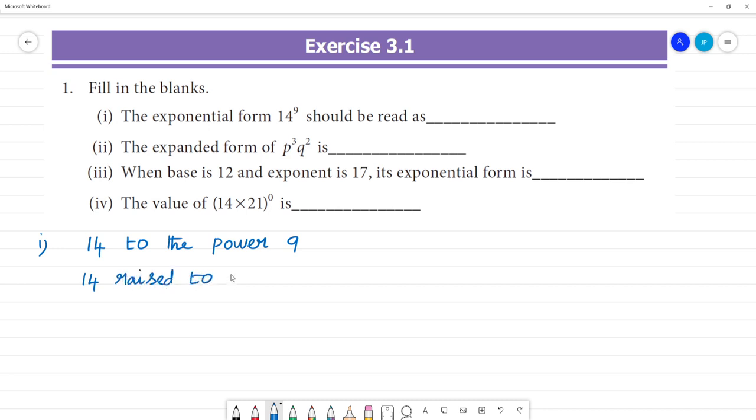We can say 14 raised to the power 9. If we say 14 raised to the power 9, otherwise, simple enough, 14 power 9. If we say 14 to the power 9, we can read it as 14 power 9. This is correct.